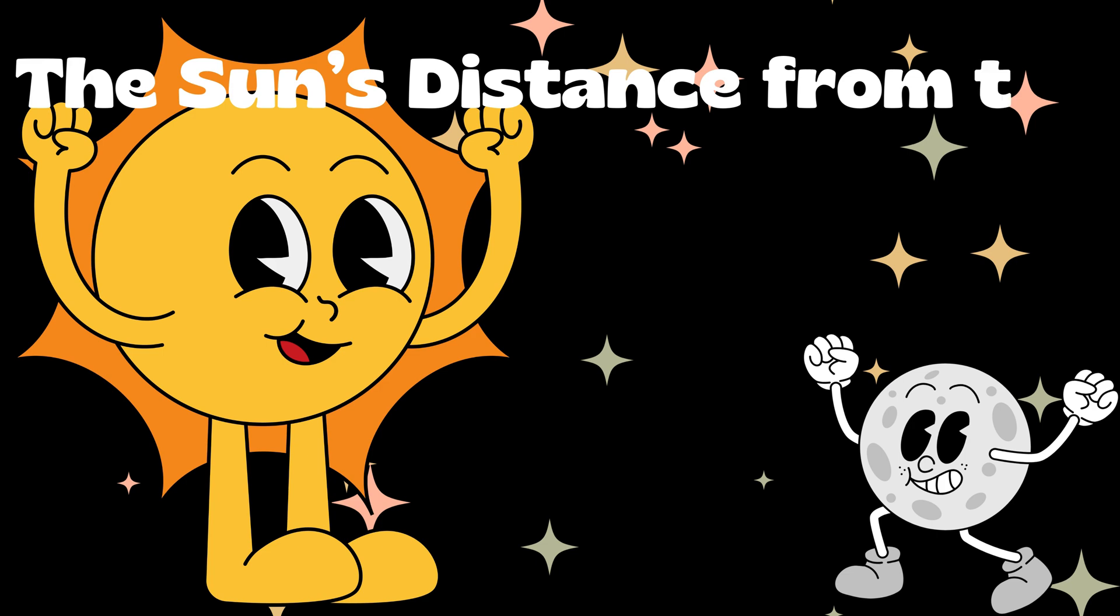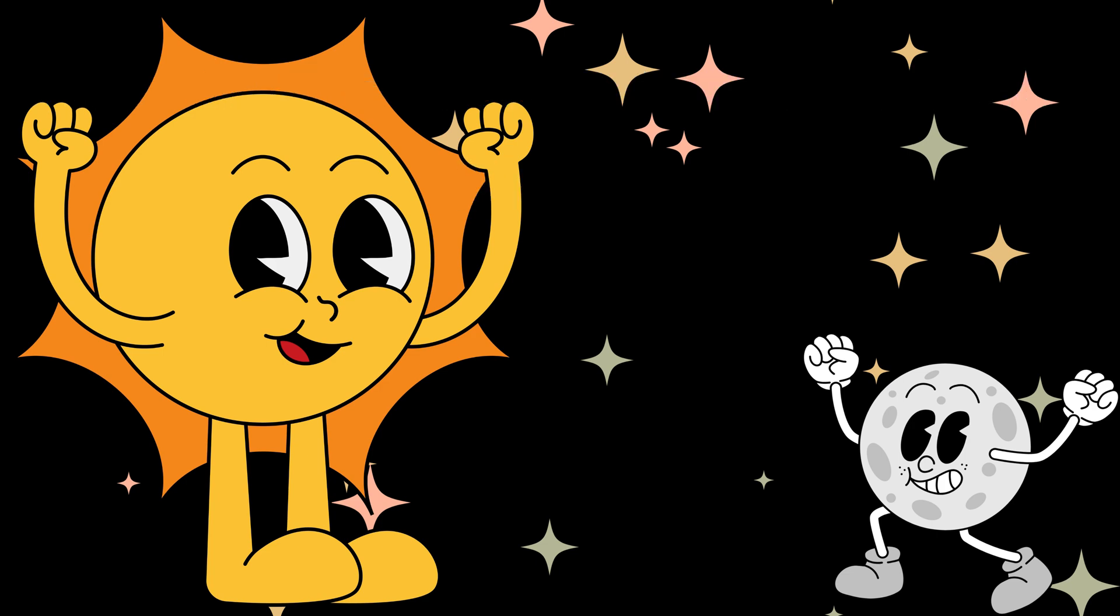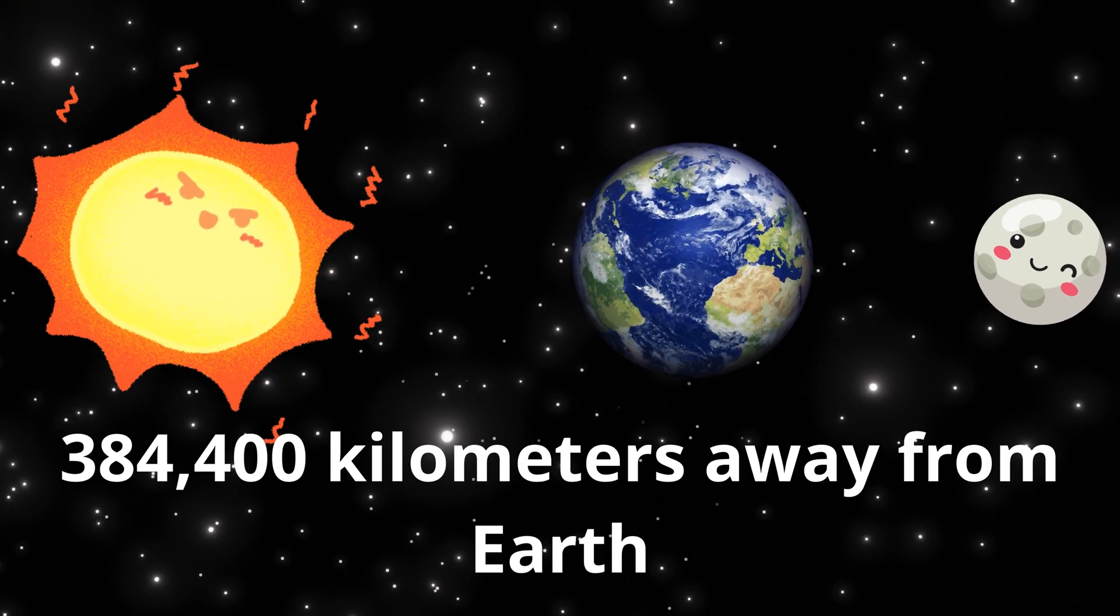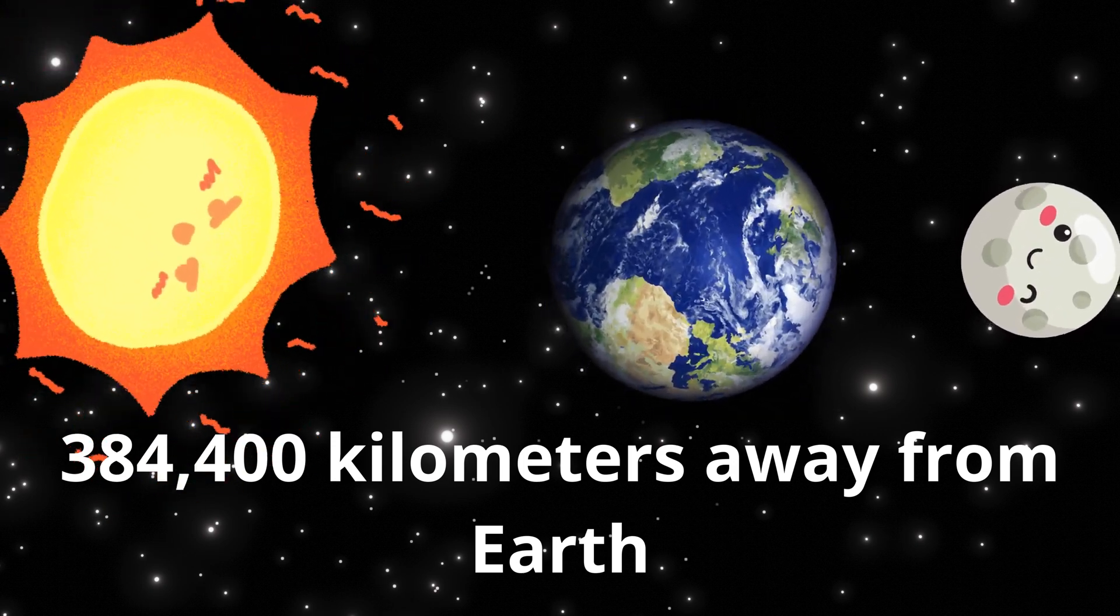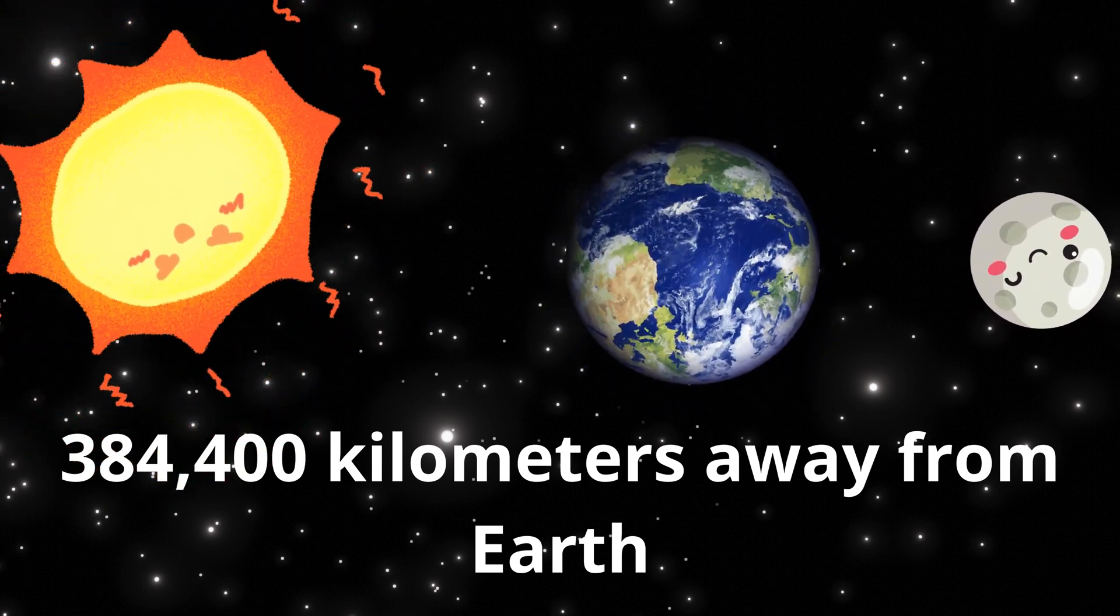The sun's distance from the moon. The moon is much closer to us than the sun. The moon is about 384,400 kilometers away from Earth. So, the sun is much farther away than the moon.